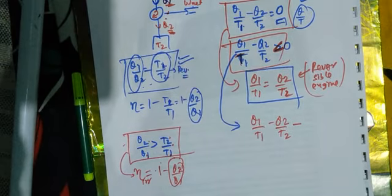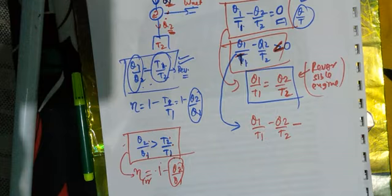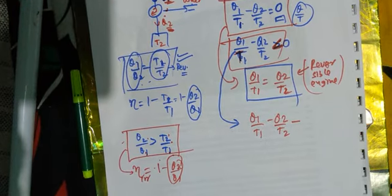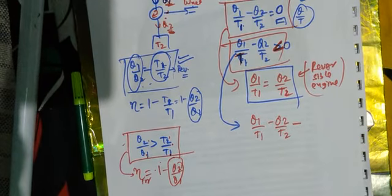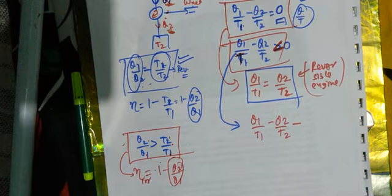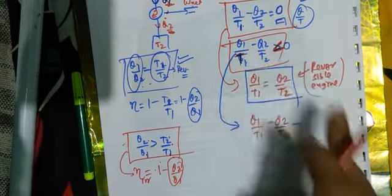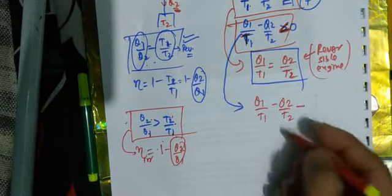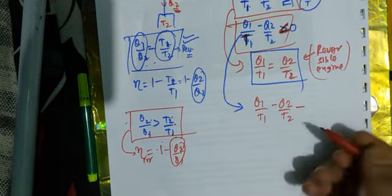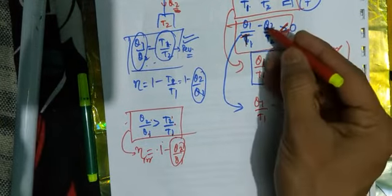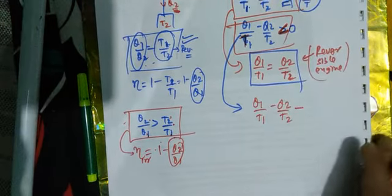For the heat engine, we can write: Q1/T1 minus Q2/T2 is less than 0.